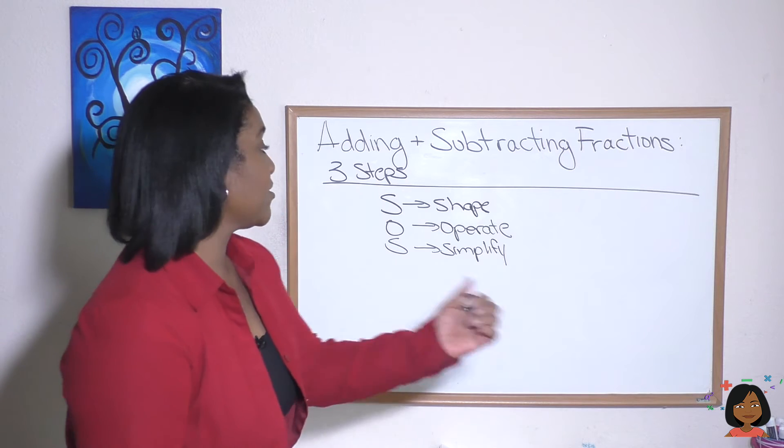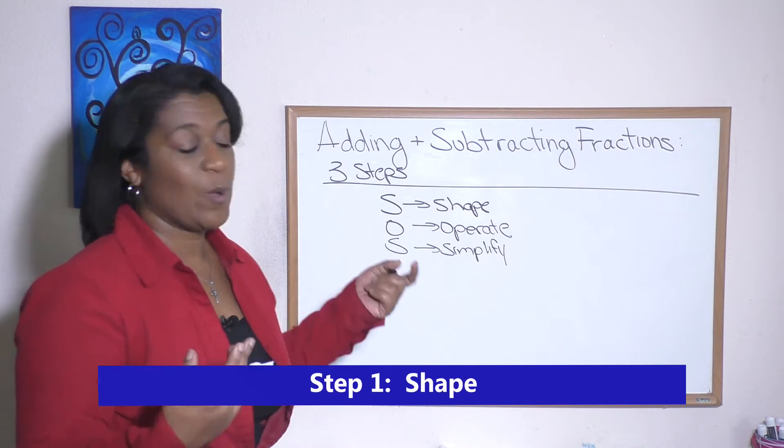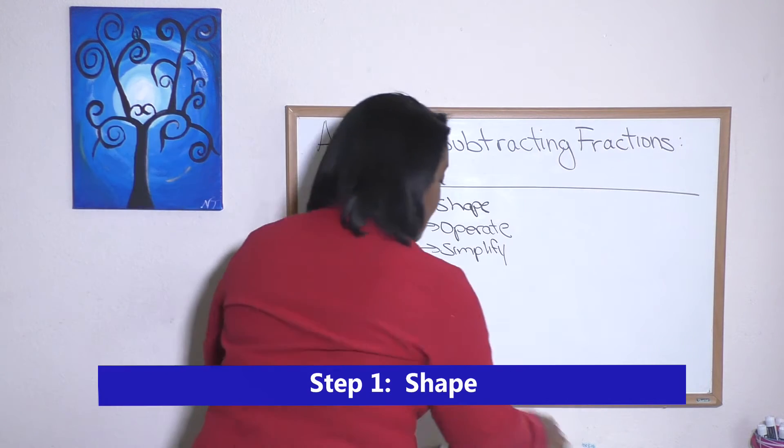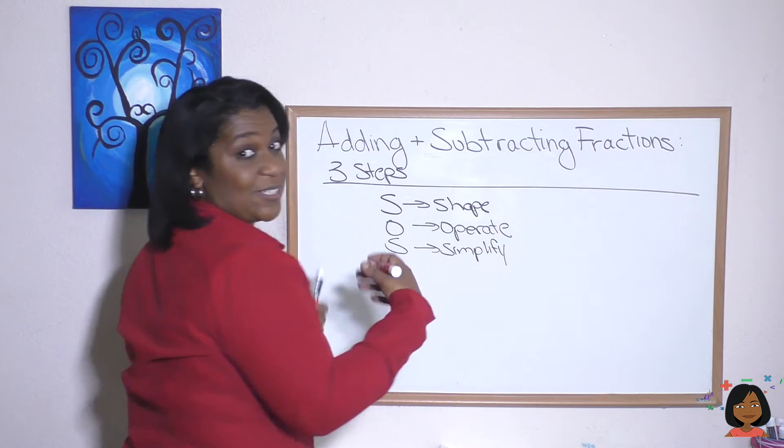Here are the three steps. First, we shape. And when we say shape, we're talking about making sure that we can actually add or subtract.